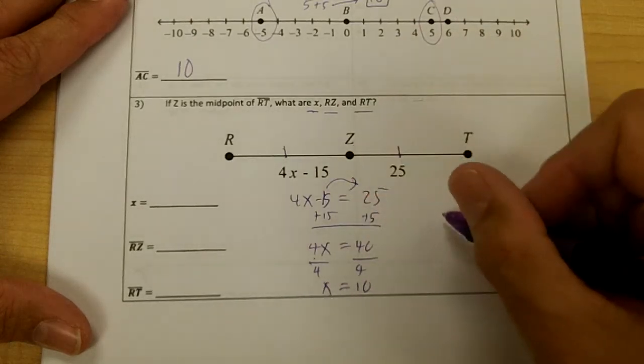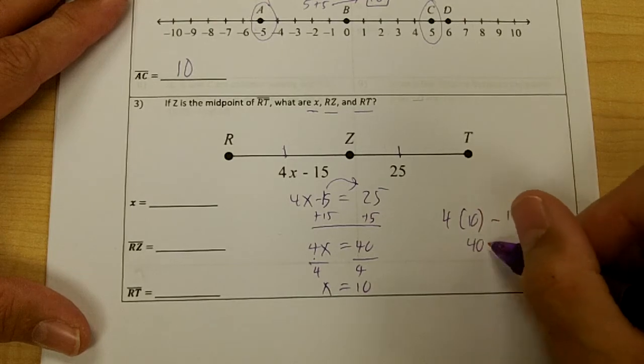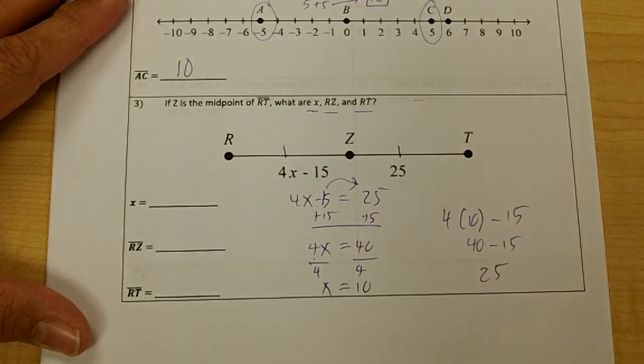Now then, if I plug 10 in here, I will get 40 minus 15, which would also be 25, wouldn't it?